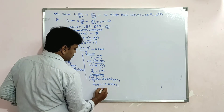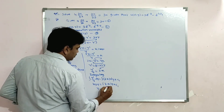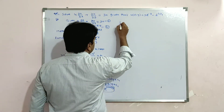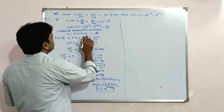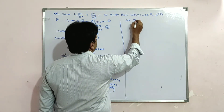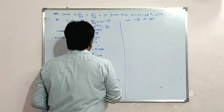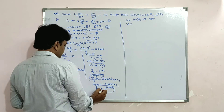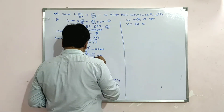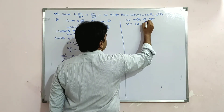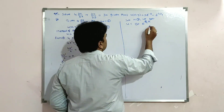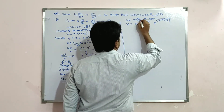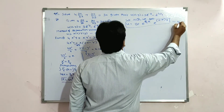Substituting X and Y into equation 3: u = B·e^(kx/4)·C·e^((3−k)y) = BC·e^(kx/4 + (3−k)y). Say this is equation 4.